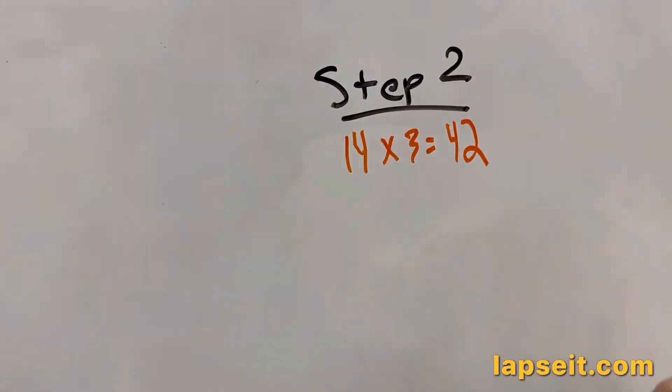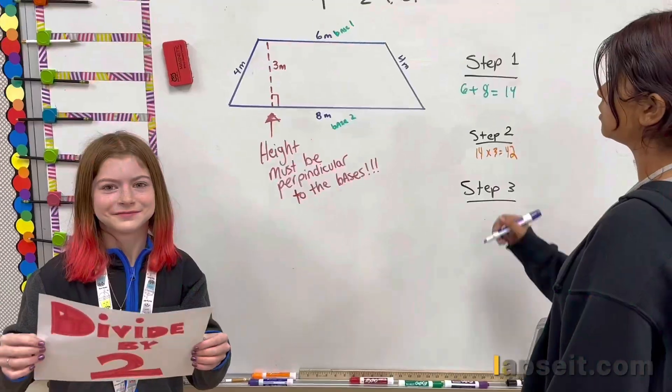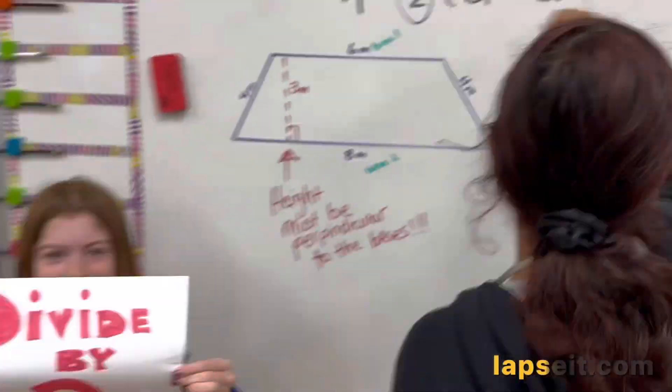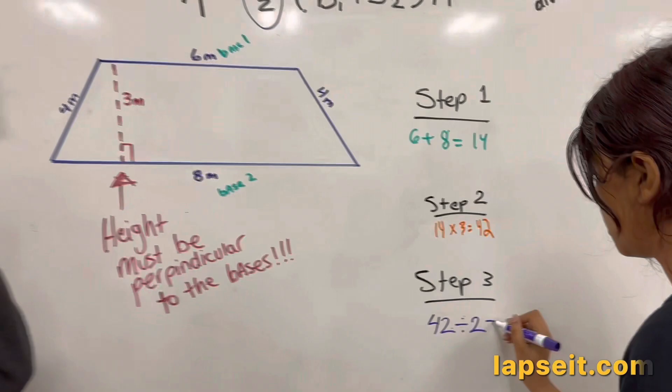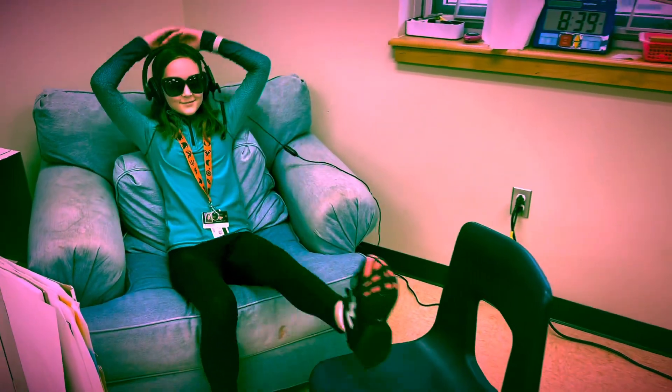Step three: Don't forget this part. A lot of people do. You gotta take the product and divide by two. Don't forget what to do. Divide by two and then you'll be through.